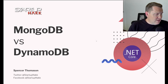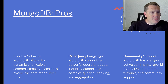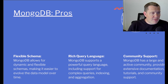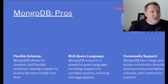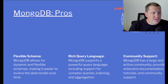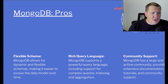The first thing we're going to dive into is the pros for MongoDB. MongoDB allows for a flexible schema, enabling dynamic and flexible schemas that make it easier to evolve the data model over time. It also provides a rich query language, supporting complex queries, indexing, and aggregation. Additionally, MongoDB has a large and active community providing extensive documentation, tutorials, and community support.